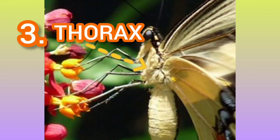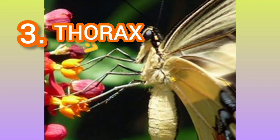This is the butterfly thorax — this is where you see the six legs of the butterfly. Let's spell thorax: T-H-O-R-A-X. This part is called thorax.